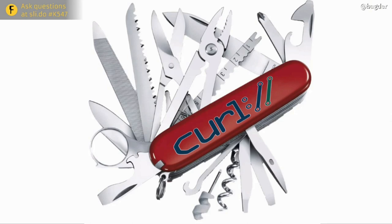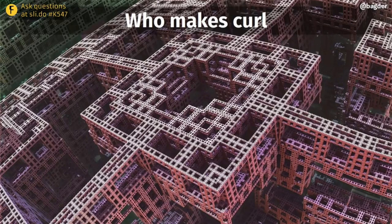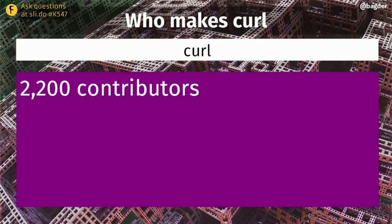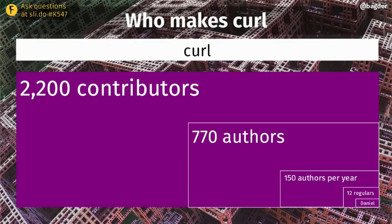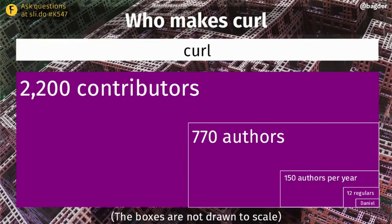Curl is the result of about 2,200 contributors having helped out over the years — writing docs, reporting bugs, contributing code. We have about 770 authors who've written code merged into the Git repository, around 150 authors write something per year, and about 10-12 people do 10 commits or more per year. I've been doing that every year for 22 years now. I might be the captain of the boat, but I'm certainly not alone.